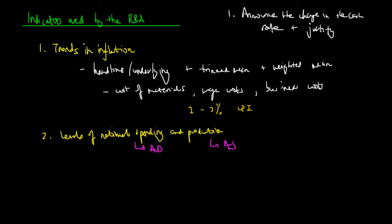therefore they would have to justify it by increasing the cash rate, so as to decrease the level of expenditure, so that inflation does not occur. So by looking at levels of national spending and production, they are able to monitor inflation more thoroughly.